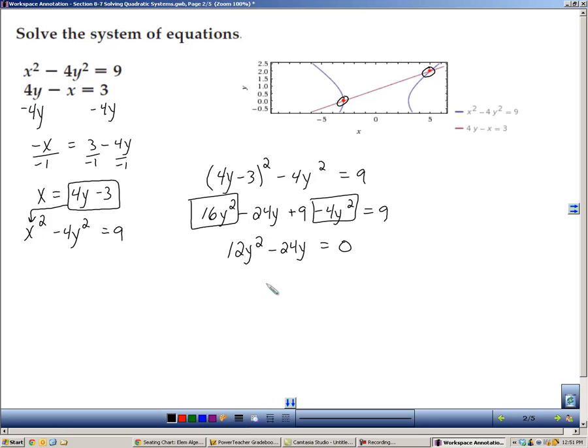Now we know how to solve this. Zero product property says I'm going to take out the 12y, leaving a y minus 2. And then I can set each factor equals 0 and solve those. So we end up with y equals 0 and y equals 2.